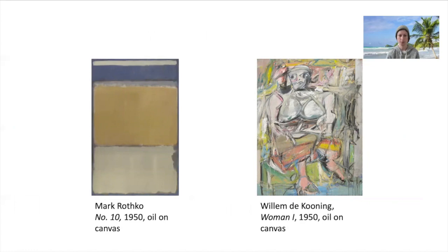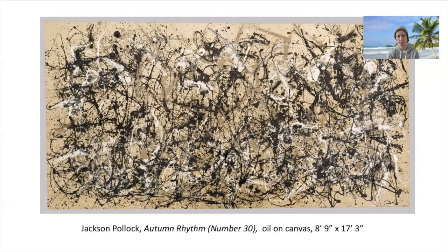So if we have these two examples — one by Mark Rothko on the left and one by de Kooning on the right — can you tell which is which? Which one is a color field painting and which one is a gestural action painting? How can you tell?